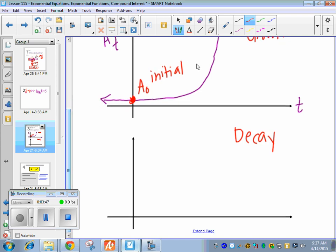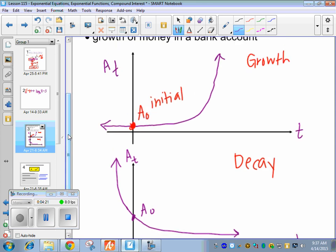So decay looks similar, but it starts with a lot, and then it decreases. So decay might be like you take a Tylenol, and maybe every hour you have half of the Tylenol left in your body. So again, t, this would be my initial amount, and this axis would be a sub t, whatever we have at time t. Basically, just memorize the general shape of growth and decay.